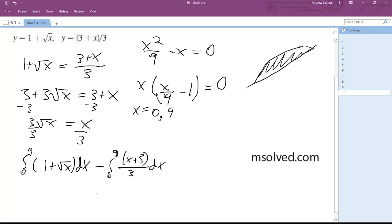Alright so what we end up with for area, it's going to be equal to x plus 2 thirds x to the 2 over 3 from 0 to 9 minus x squared over 6 plus x from 0 to 9.